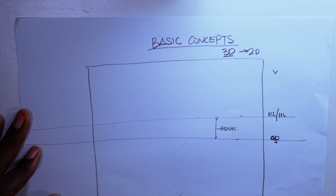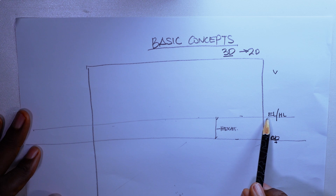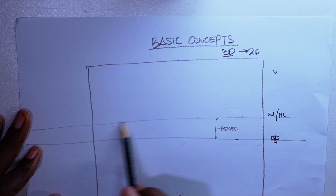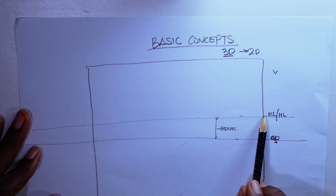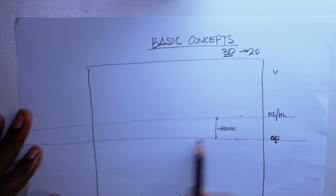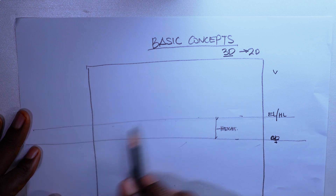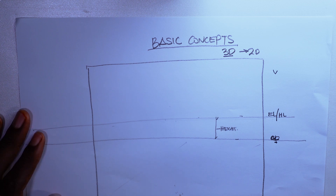In your perspective projections, you must understand these three concepts: the ground plane, the horizon level or eye level, and the vertical plane. With this setting, you can go ahead to navigate your perspective.